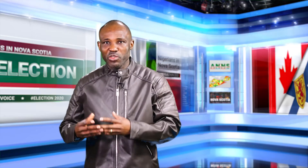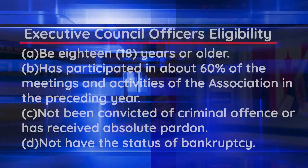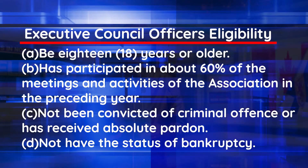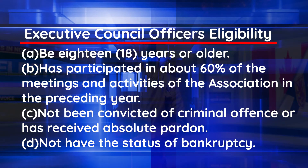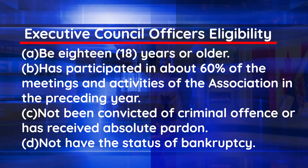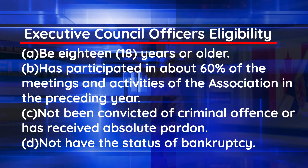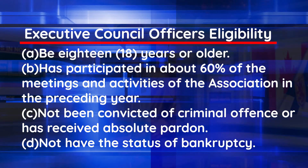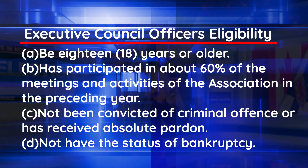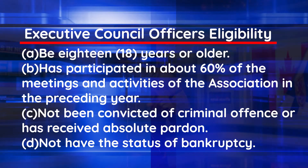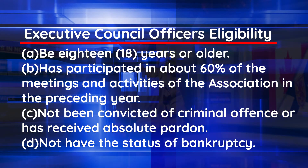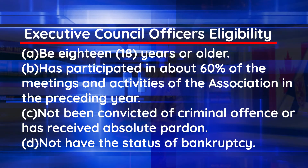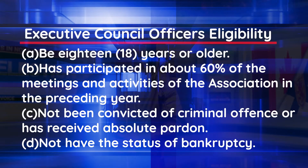Now, election of executive council officers. To be eligible for election as an officer, an individual must be 18 years or older in age and also has participated in about 60% of the meetings and activities of the association in the preceding year. That individual must not have been convicted of any criminal offense or has received absolute pardon, and should not have the status of bankruptcy.